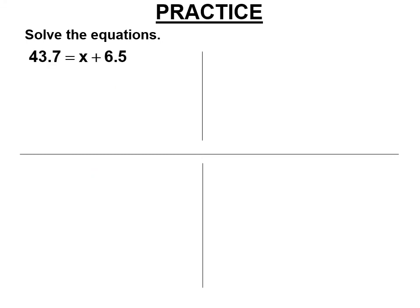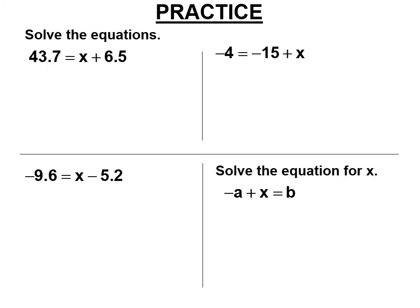So let's practice. So subtract 6.5 from both sides. And we do a little borrowing there. 13 minus 6 is 7. I'm getting 37.2 equals x.